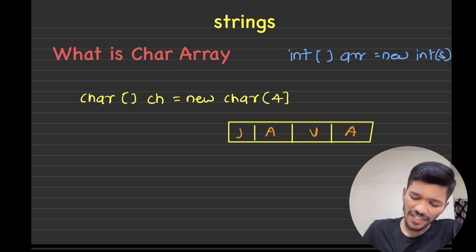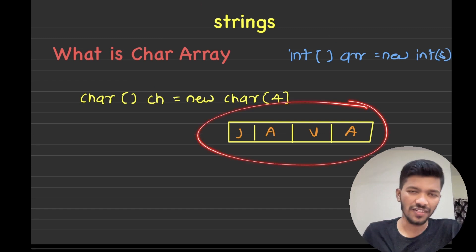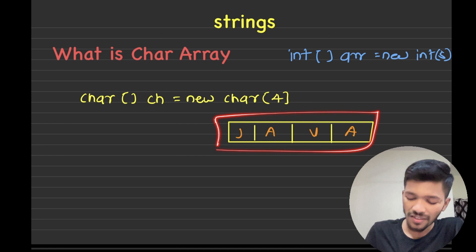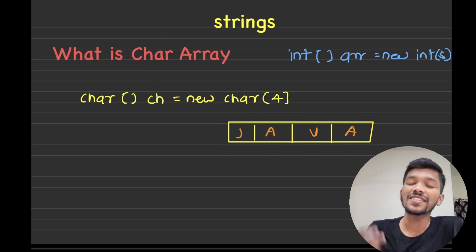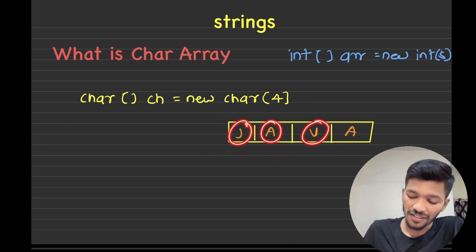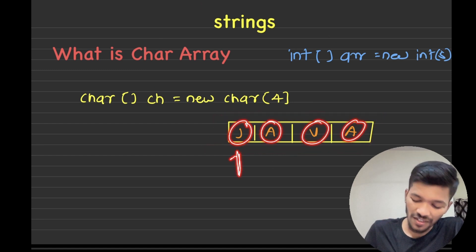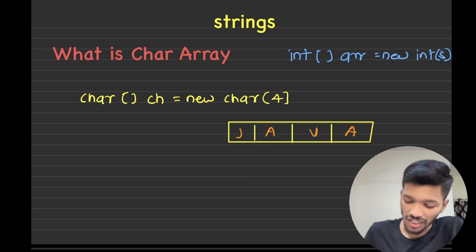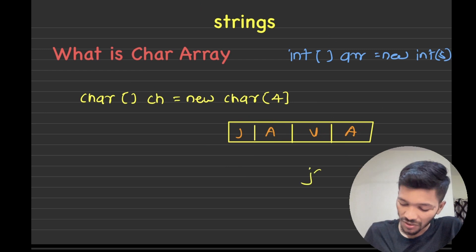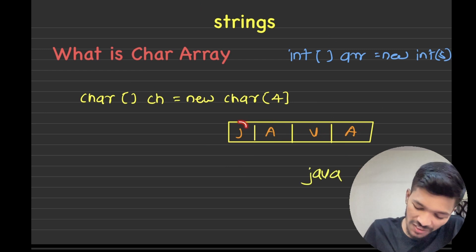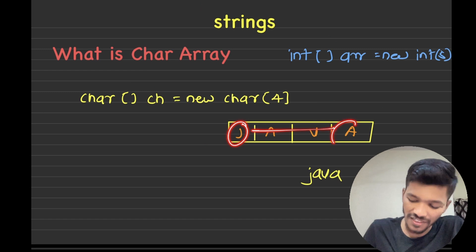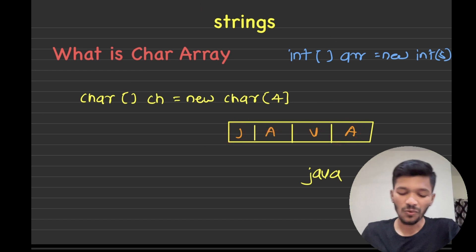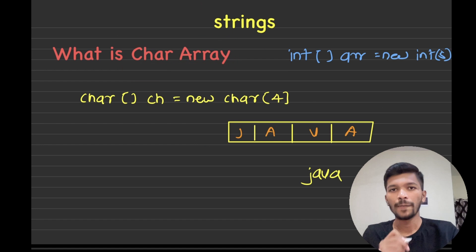Now, can we call this character array a string? No. The reason is that in order to print this, I need to traverse the character array from character to character — right from the first character to the last — simply to print 'Java'. I need to move from the first character till the last character. Therefore, these are not called strings. So we got the first reason why character arrays are not called strings.